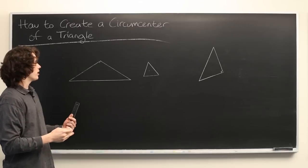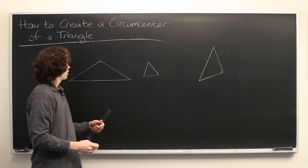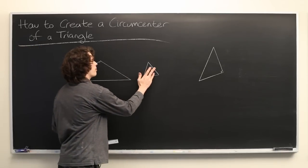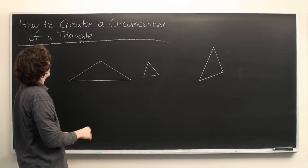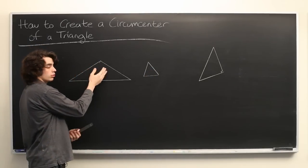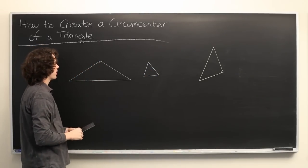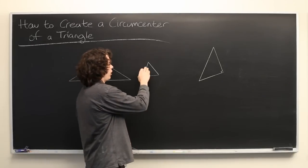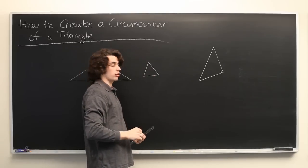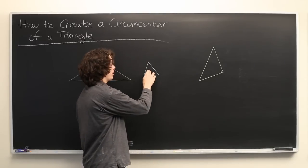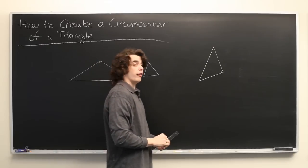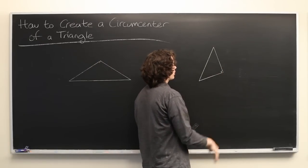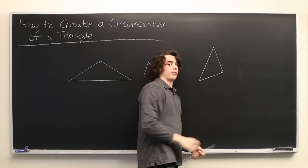You can find the circumcenter simply by knowing the lengths of your sides. You should note that for an obtuse triangle, in which one of the angles is obtuse, the circumcenter will actually lie outside of the triangle. For an acute triangle, in which all of the interior angles are acute, the circumcenter will be on the inside. And for a right triangle, in which one of the angles is a right angle, the circumcenter will lie on the hypotenuse.